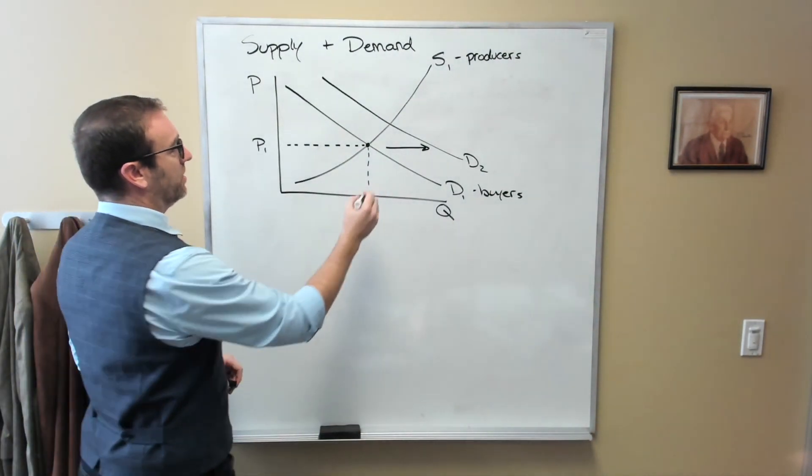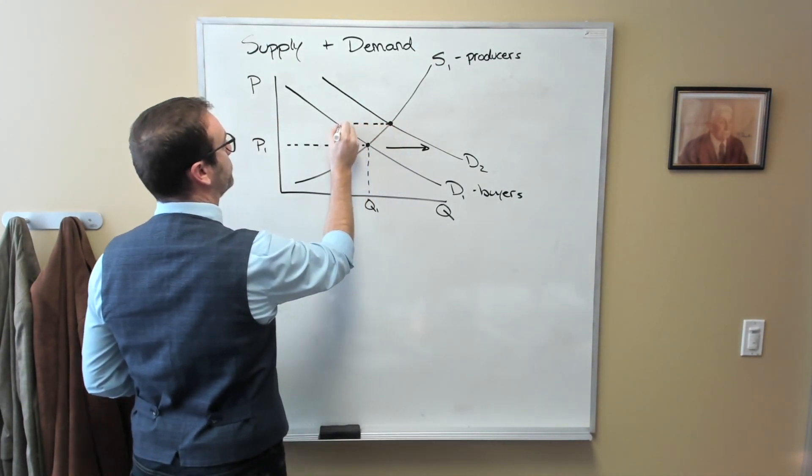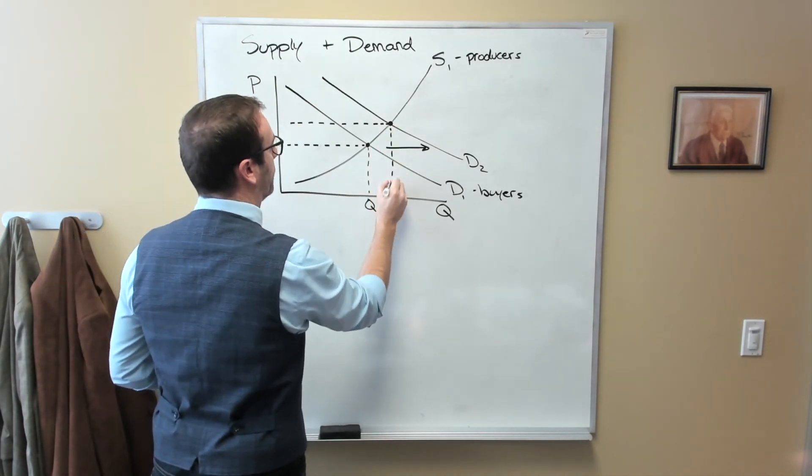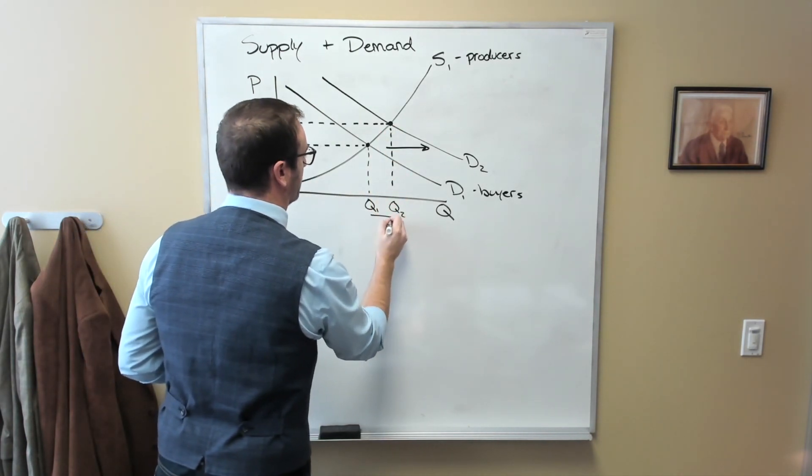And as a result, the equilibrium price would shift up and the equilibrium quantity would also increase.